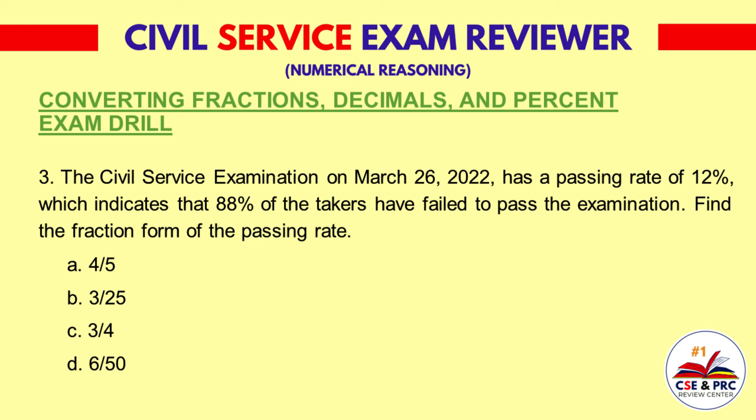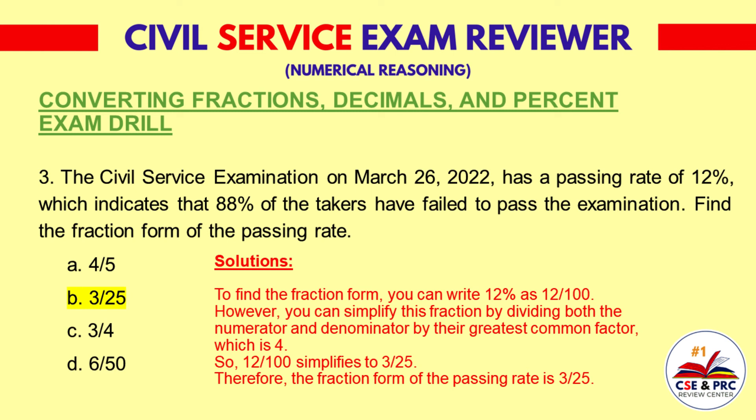The answer is B — 3 over 25. Solution: To find the fraction form, write 12% as 12 over 100. Simplify by dividing both the numerator and denominator by their greatest common factor, which is 4. So 12 over 100 simplifies to 3 over 25. Therefore, the fraction form of the passing rate is 3 over 25.